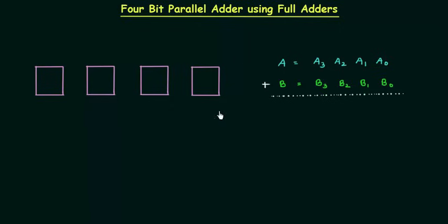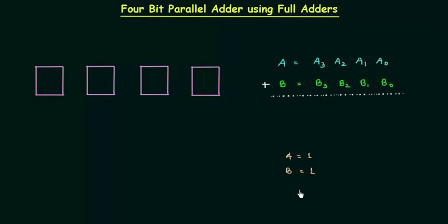Welcome to this presentation. Let's revise what we have learnt till now. We have added two single-bit numbers. Let's say A is the first number equal to 1, and B is the second number also equal to 1. These are the two single-bit numbers and we have added them with or without carry.